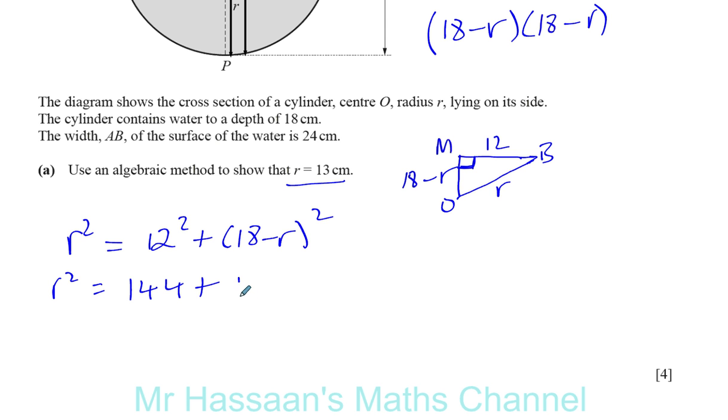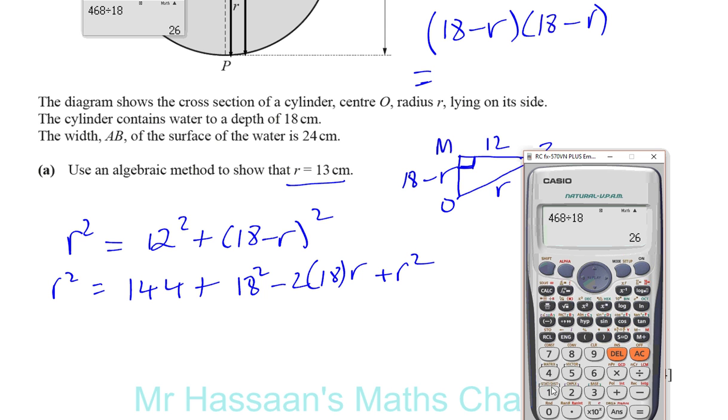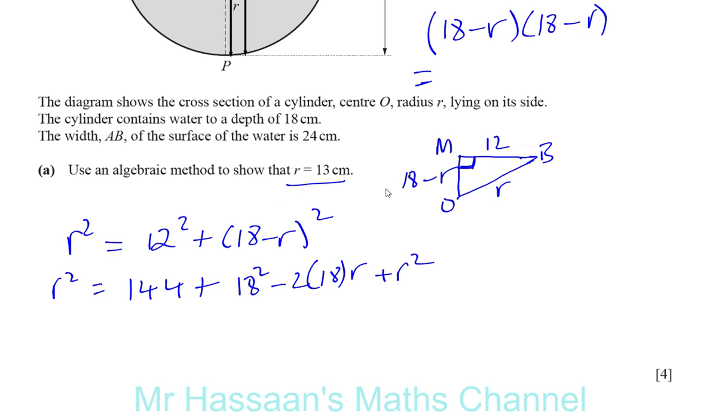So 18 squared. And you're going to have, because this is a minus, I like to write it like this, minus, then you have 2 times 18 times R, then you're going to have plus - it's always plus because when you square the negative term becomes positive - R squared. That's the pattern way. What is 18 squared? Let's just work it out here. So 18 squared equals 324. So you're going to have R squared equals 144 plus 324 minus 36R plus R squared.